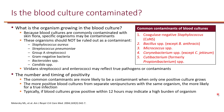These organisms exist in the environment and can find their way onto the skin and sometimes into the sample. It is important to get multiple blood samples from separate venipunctures in order to see if the organisms grow in all cultures. If only one sample is growing one of these contaminants, it is safe to assume it is a contaminant. Whereas if multiple cultures are growing coagulase-negative staph, for example, it is less likely to be a contaminant and more likely to be a true infection.